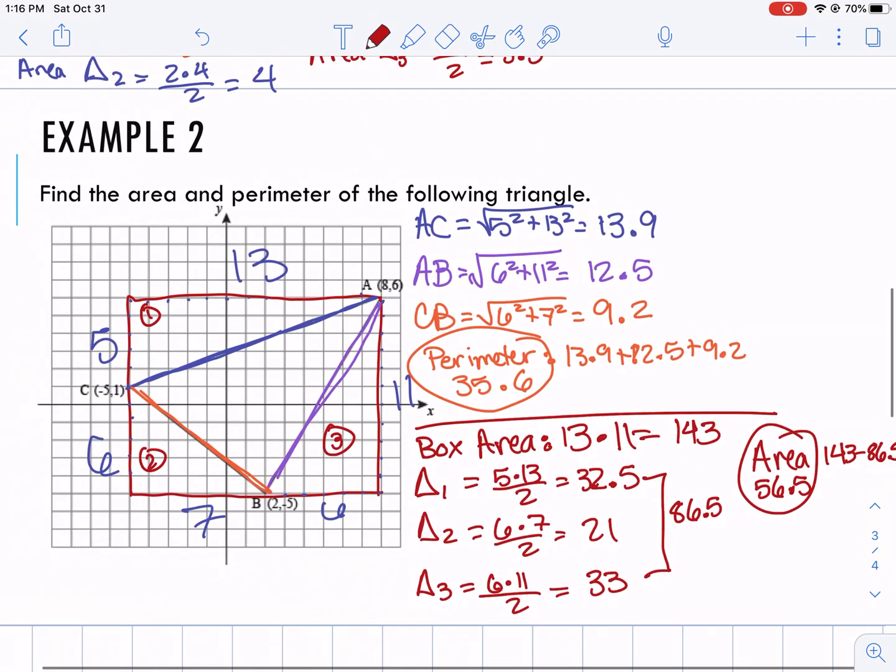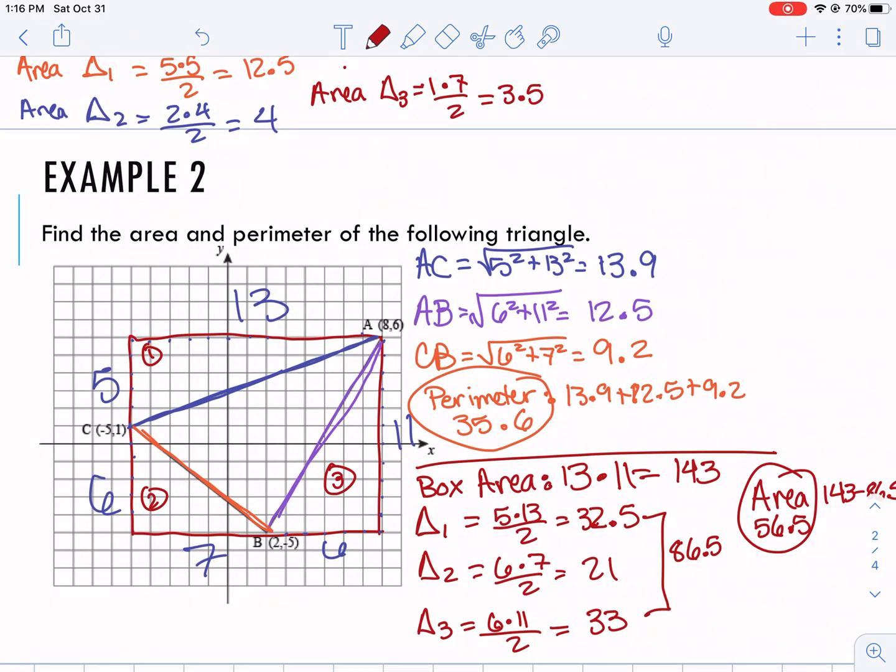So that is how we use the box method to find area and perimeter on the coordinate plane.